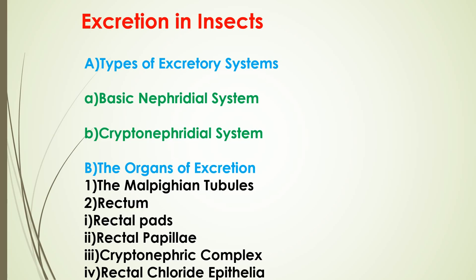All tubules open independently, but in some insects such as flies, all tubules open proximally into a common ureter and finally into the gut. In some beetles such as Haltica and Donacea, a group of four tubules open into a common ampulla while the remaining two open independently. In red cotton bugs and Dacus, all tubules of one side open into a common ampulla or bladder which ultimately opens into the gut. In Hemiptera, the tubules are differentiated into a distal clear part filled with fluid and a proximal half containing solid or granular substance.